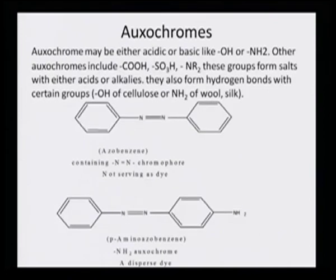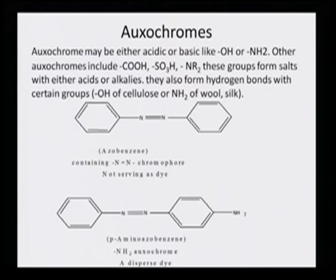The common oxochromes that are observed may be either acidic or basic, like OH or NH₂. Other oxochromes include carboxylic acid (COOH), SO₃H, NH, and NR₂. These groups form salts with either acids or alkalis.